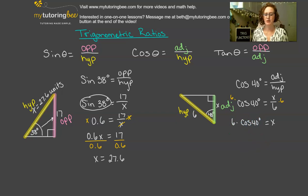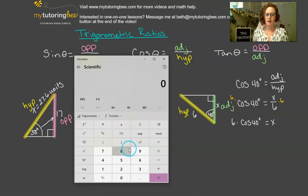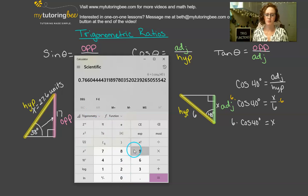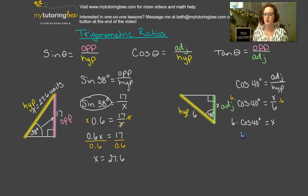So now we can go ahead and plug these into our calculator. We've got 6 times the cosine of 40. The cosine of 40 is 0.766. And then we're going to hit equals — times 6 — so we've got 4.6 if we round to the nearest tenth. So x equals 4.6 units.